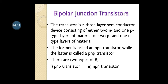To construct a bipolar junction transistor, these two semiconductors are used in such a way that it forms a three-layer device. One type of semiconductor is used twice and the other semiconductor is placed in between. For example, a transistor is a three-layer semiconductor device: the first layer is N-type, the second is P-type, and the third is again N-type. So P-type semiconductor is sandwiched between two N-type semiconductors.